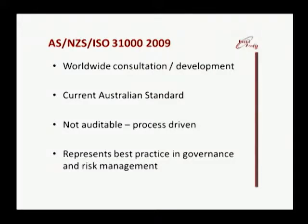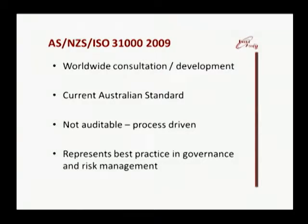You may find a lot of documentation that quotes AS/NZS 4360 — that was the preceding standard. The actual principles of the risk management process are the same but the governance aspect is missing from that one. That's why we don't see very much of the governance in risk management plans yet, so it's not auditable. This checklist is not about how you go through it step by step; it's just validating the sort of things we expect to see. It represents best practice in governance and risk management.